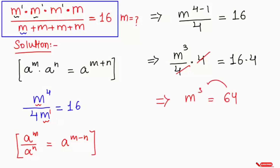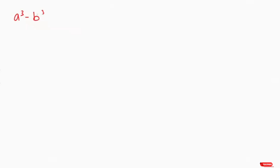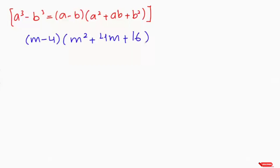Now I'm going to take 64 to the left hand side: m cubed minus 64 equals 0. I'll write 64 in the form of a power, giving m cubed minus 4 to the power of 3 equals 0. Applying the algebraic identity a cubed minus b cubed, this factors to m minus 4 times m squared plus 4m plus 16 equals 0.